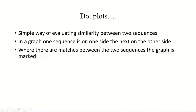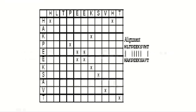In a graph, one sequence is on one side and the next is on the other side. One sequence is horizontal and one sequence is vertical, and then you will be able to compare them. When there are matches between the sequences, the graph is marked. Here you can see that this is horizontal and in horizontal you have a sequence, and this sequence is in vertical form.